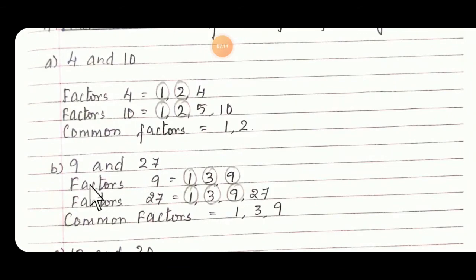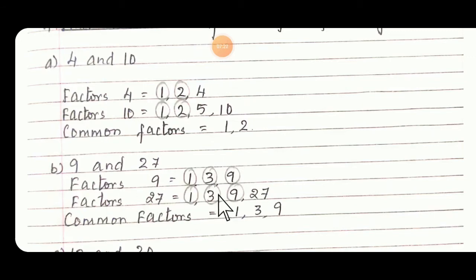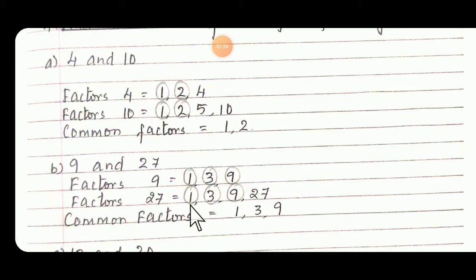B: 9 and 27. Factors of 9 are 1, 3, and 9. Factors of 27 are 1, 3, 9, and 27. So which are the common factors among these two — that I have circled? 1, 3, and 9.